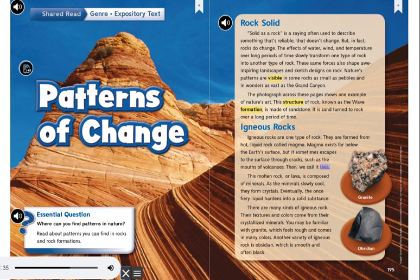Then we call it lava. This molten rock, or lava, is composed of minerals. As the minerals slowly cool, they form crystals. Eventually, the once fiery liquid hardens into a solid substance.